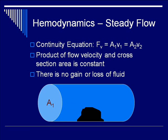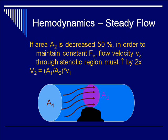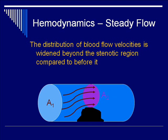If we look at a schematic of a vessel lumen with a thrombus in the middle, area A1 is proximal to the thrombus. Applying the continuity equation, we know that as blood flows across the stenosis, velocity must increase because of the decreased cross-sectional area across the thrombus. The area over the thrombus is A2. As the area decreases by 50%, in order to maintain constant flow, velocity V2 is increased by a factor of 2. V2 equals A1 over A2 times V1. The distribution of blood flow velocities is also widened beyond the stenotic region compared to before it.